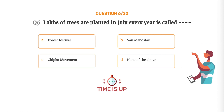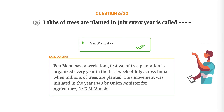The correct answer is Option B, Vanmahotsav. A week-long festival of tree plantation is organized every year in the first week of July across India, when millions of trees are planted. This movement was initiated in the year 1950 by Union Minister for Agriculture, Dr. K. M. Munshi.